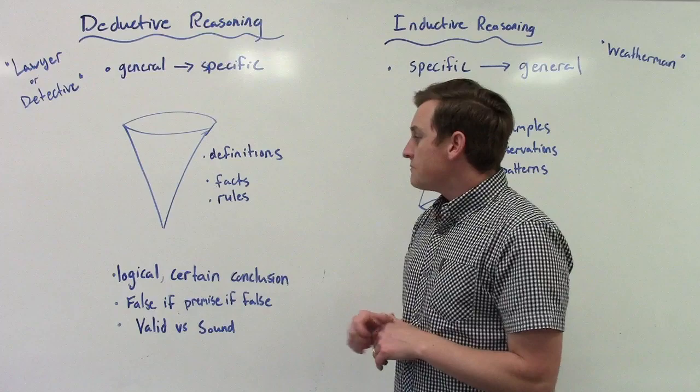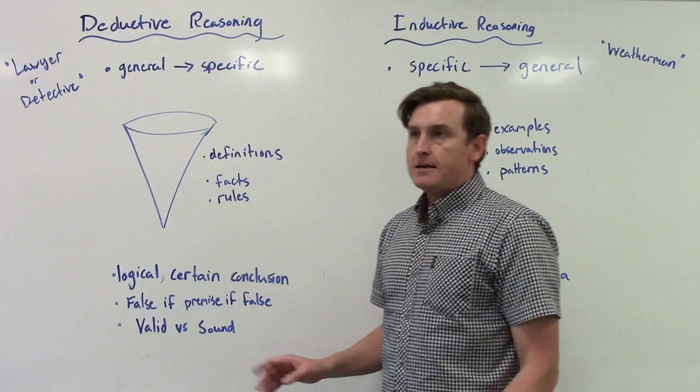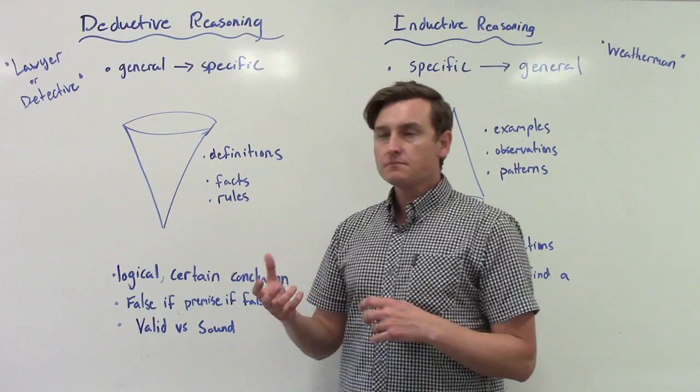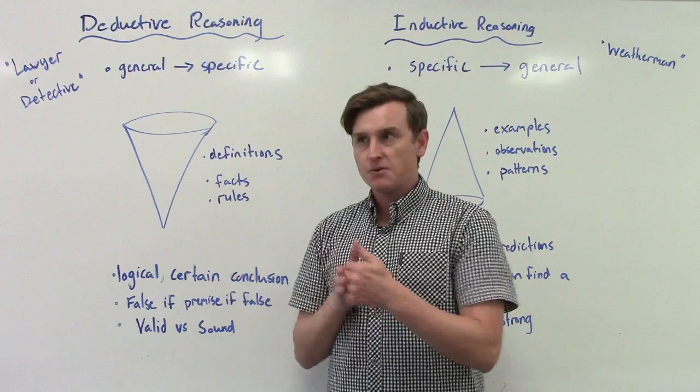You'll also notice these two things down here. It says false if premise is false and then valid and sound. So sometimes what can happen is you make an argument and that argument follows all the rules of logic, but the very first thing you said wasn't true, and so everything after it is not true.